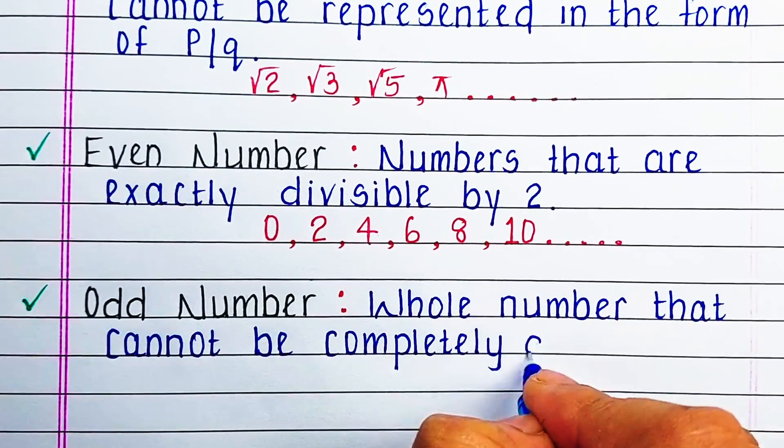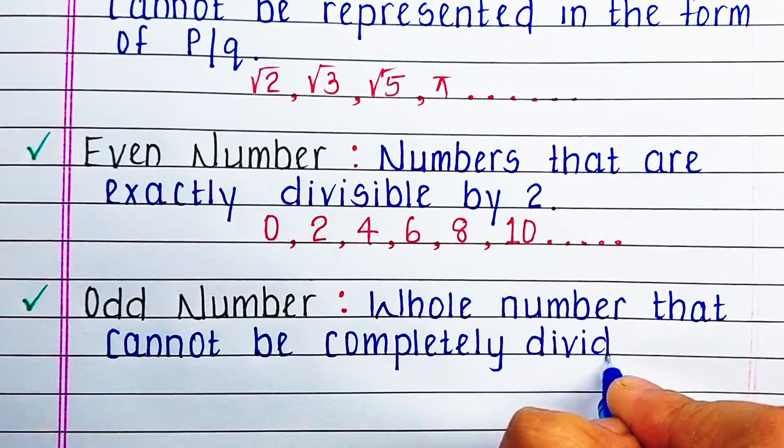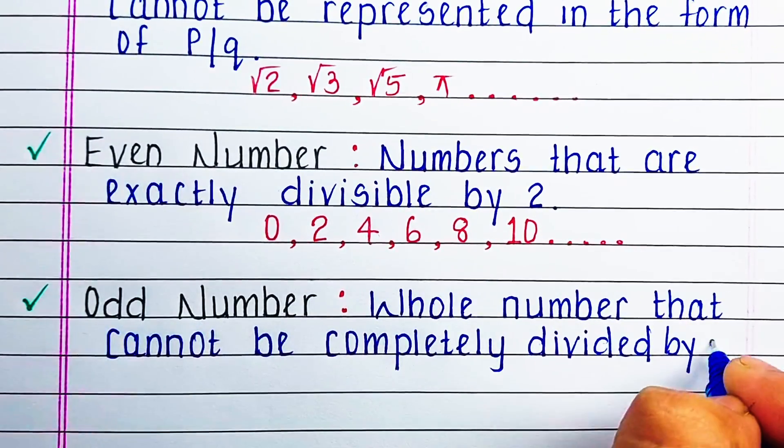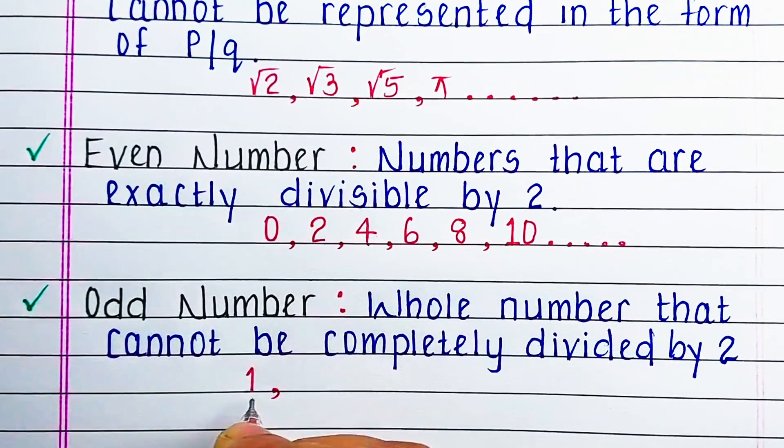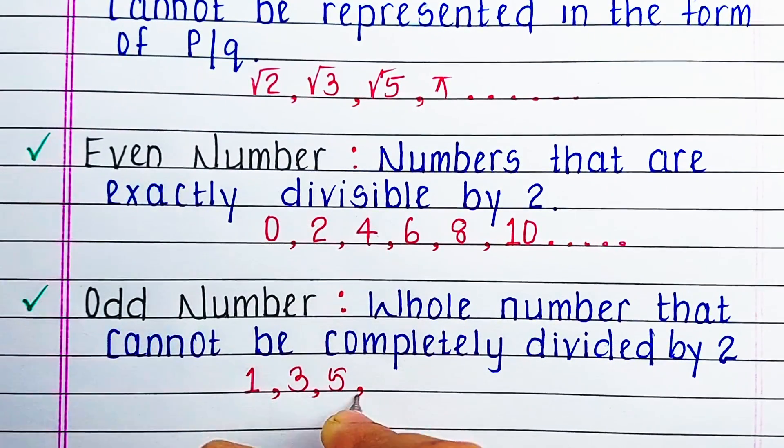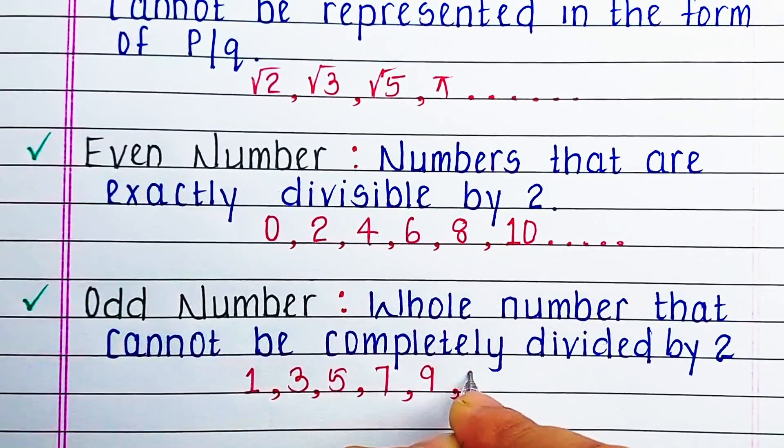Next is odd number. Whole numbers that cannot be completely divided by two are known as odd numbers. For example, 1, 3, 5, 7, 9, 11, etc.